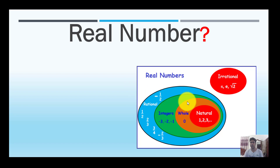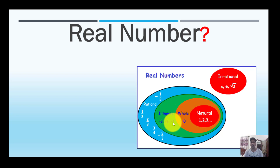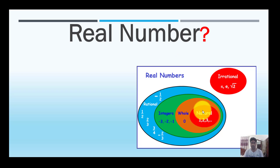A rational number: for example, minus 1 is rational, one-half is rational, and 2/3 is a rational number. An integer: if the integer is equal to minus 1, it is divided by 1. The countable numbers are 1, 2, 3, 4, 5 — these are the natural numbers.